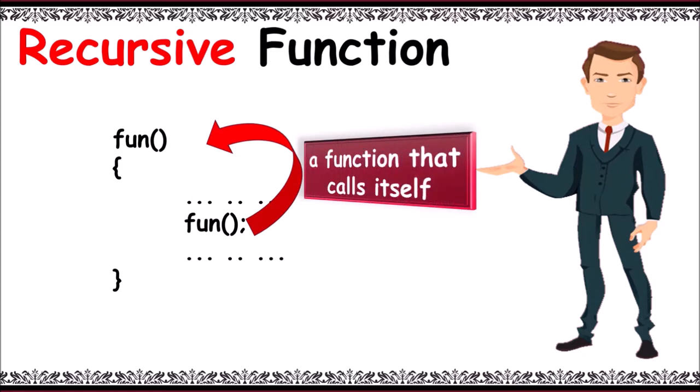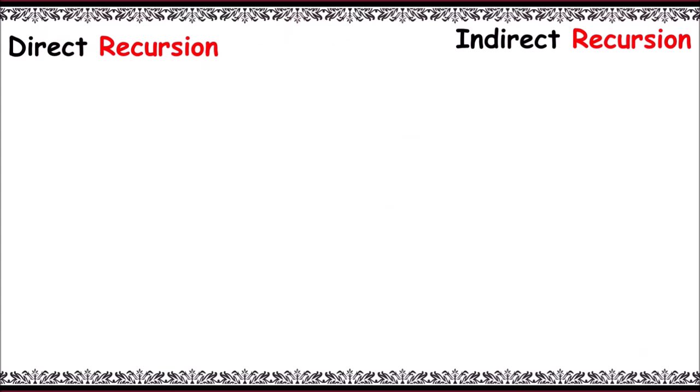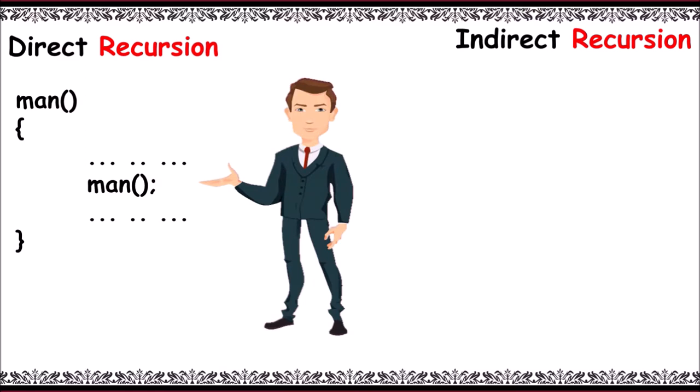Now recursion can be of two types. One among them is direct recursion. Here you can observe a man function. Inside it we can observe we are calling the same function man. This is called direct recursion.